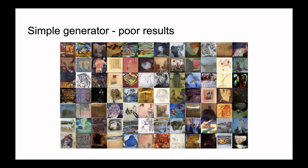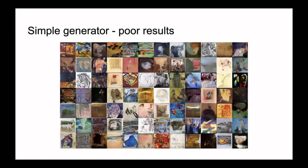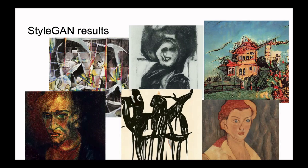These are the results of StyleGAN — this model was used in the t-shirt site and it's already much better than what you saw in the previous slide. It isn't the best we have today, but it's much better than all previous models. StyleGAN is a model from NVIDIA's AI lab and it outputs images at 1,000×1,000 resolution, which is really good.